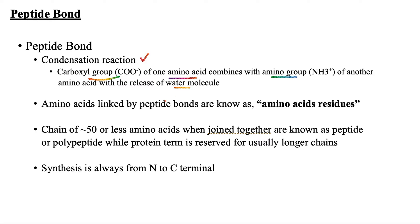When amino acids are linked by peptide bonds, they are known as amino acid residues. A chain of 50 or fewer amino acids joined together is known as a peptide or polypeptide, while the protein term is usually reserved for longer chains.